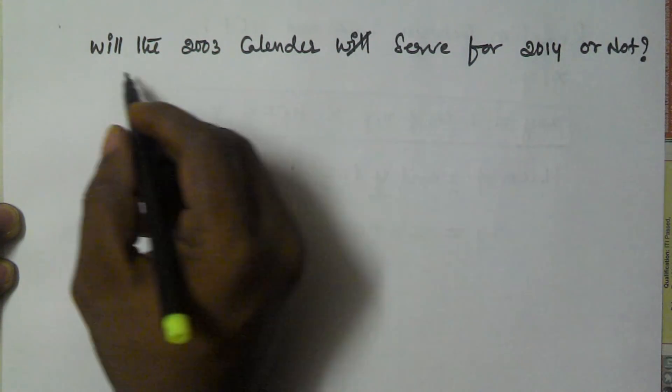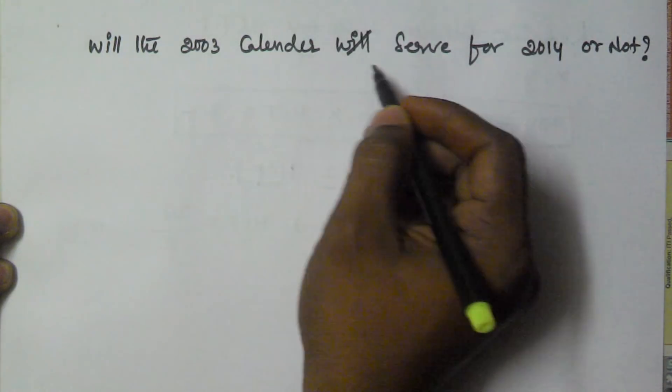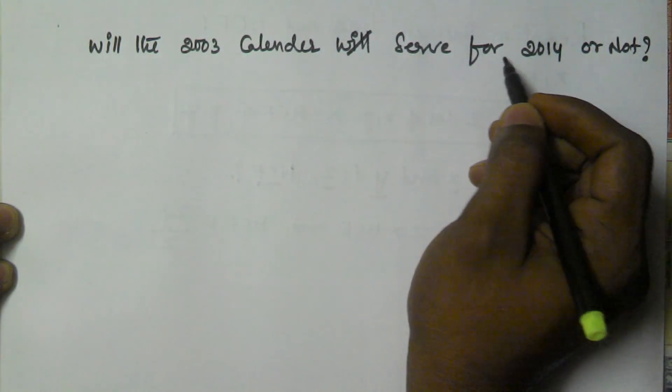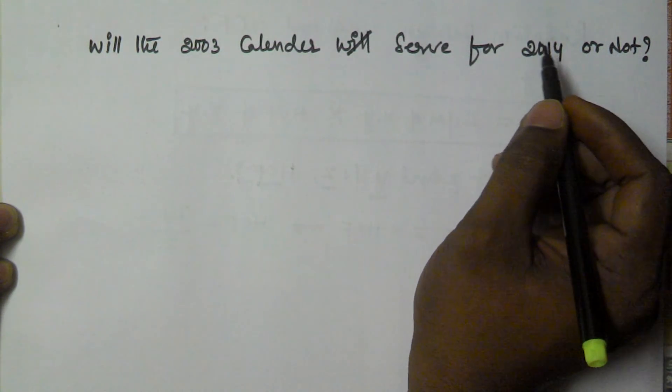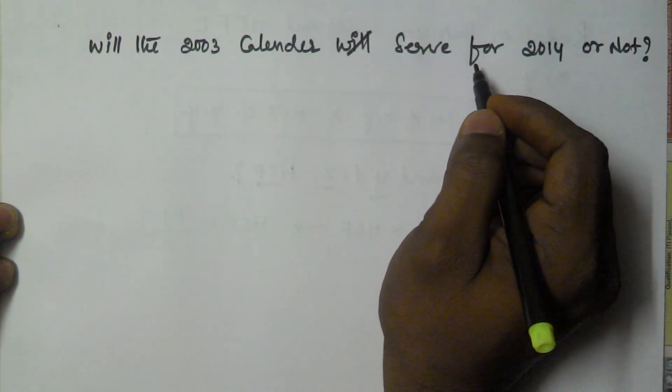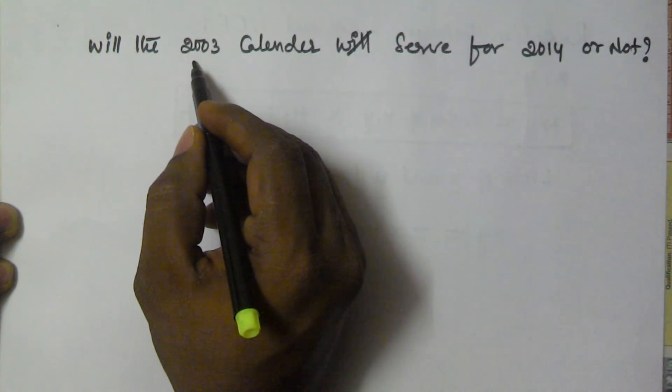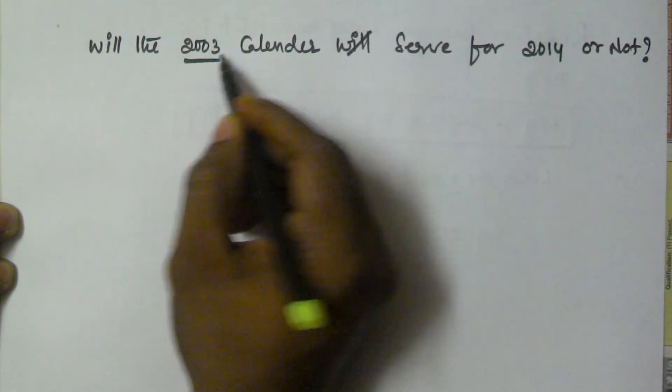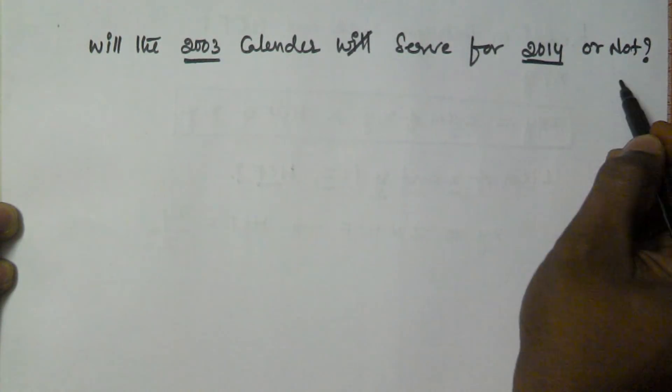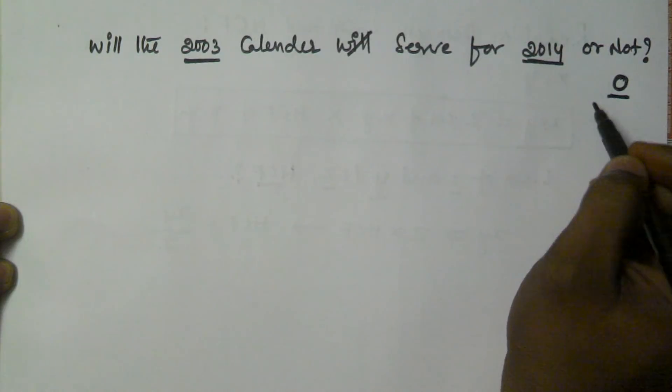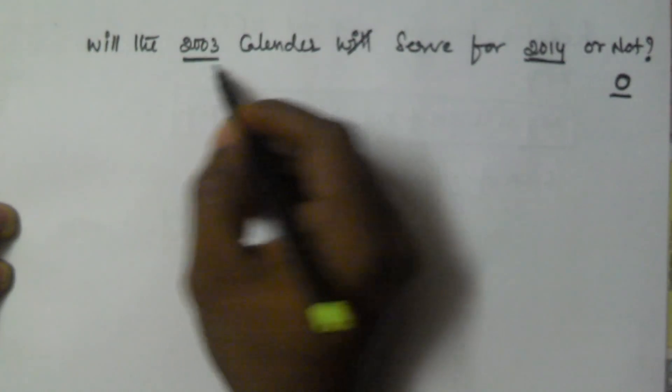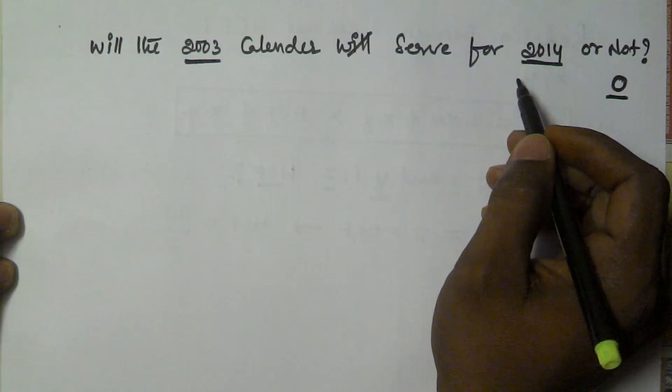Will the 2003 calendar serve for 2014 year or not? To prove this, we have to prove that the number of odd days from 2003 to 2014 must be 0.